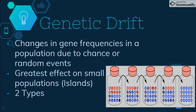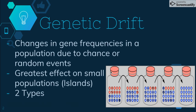Genetic drift are changes in gene frequencies in a population due to chance or random events. Looking at this image of a bottle, we have our original population here. We have ten blue alleles and we have ten red alleles. So in our original parent population, we have an even frequency — 50-50 — of red and blue alleles.